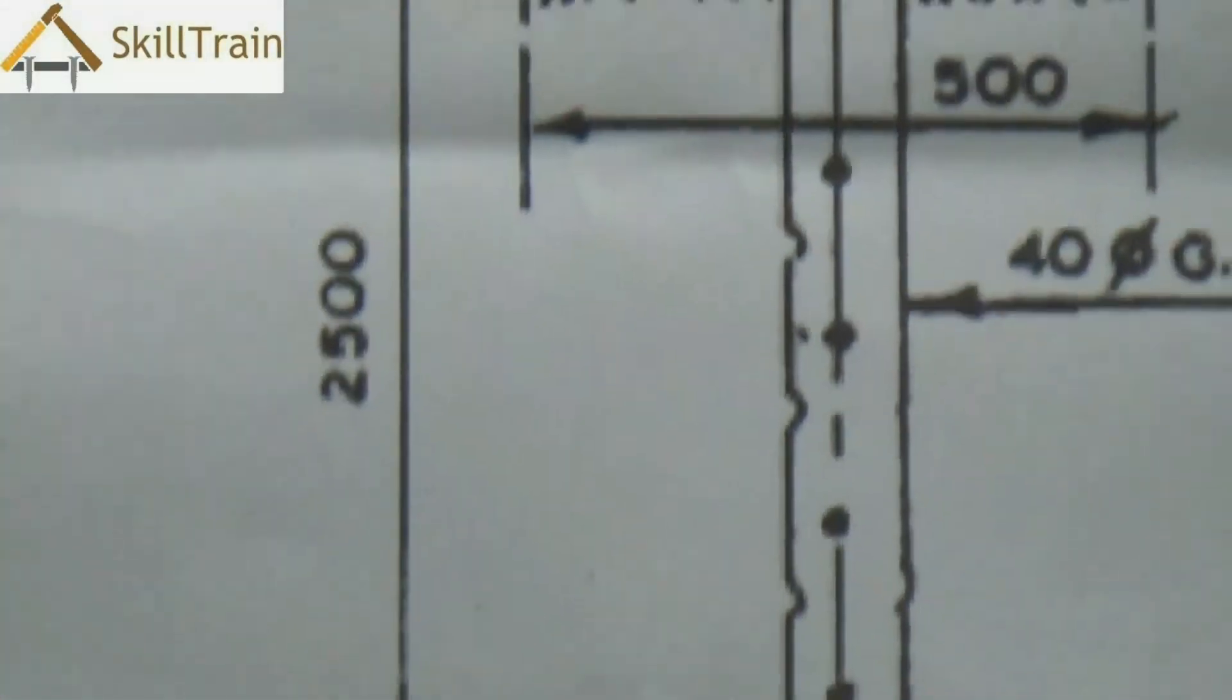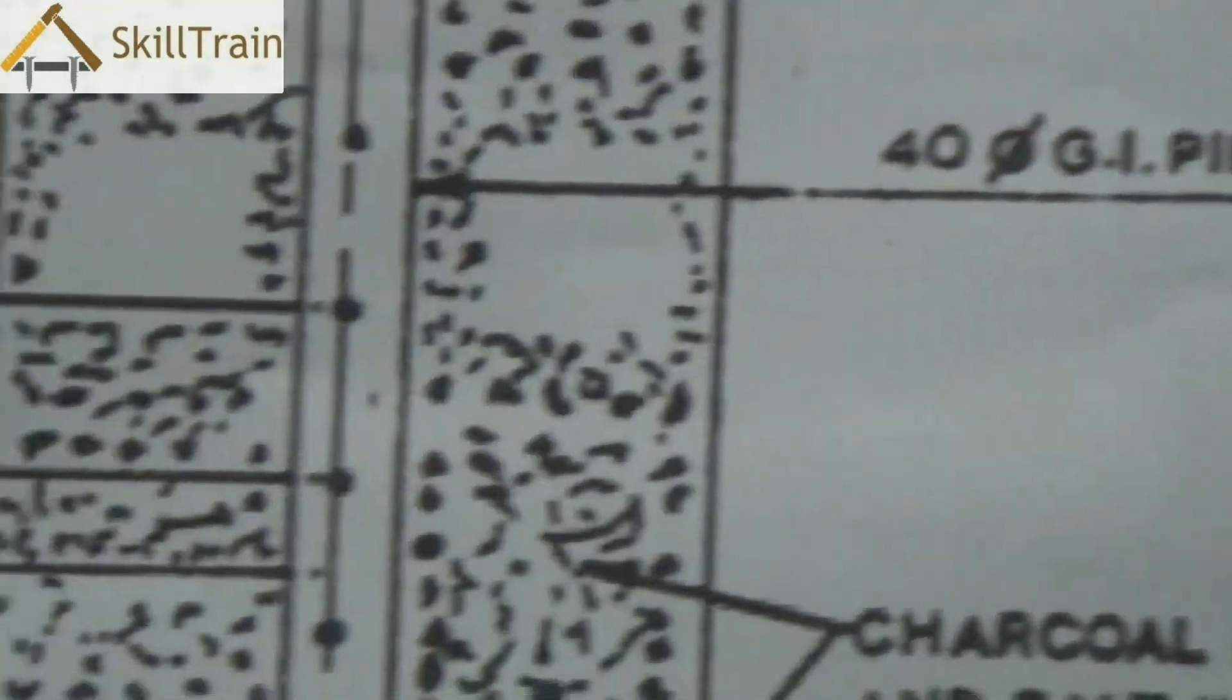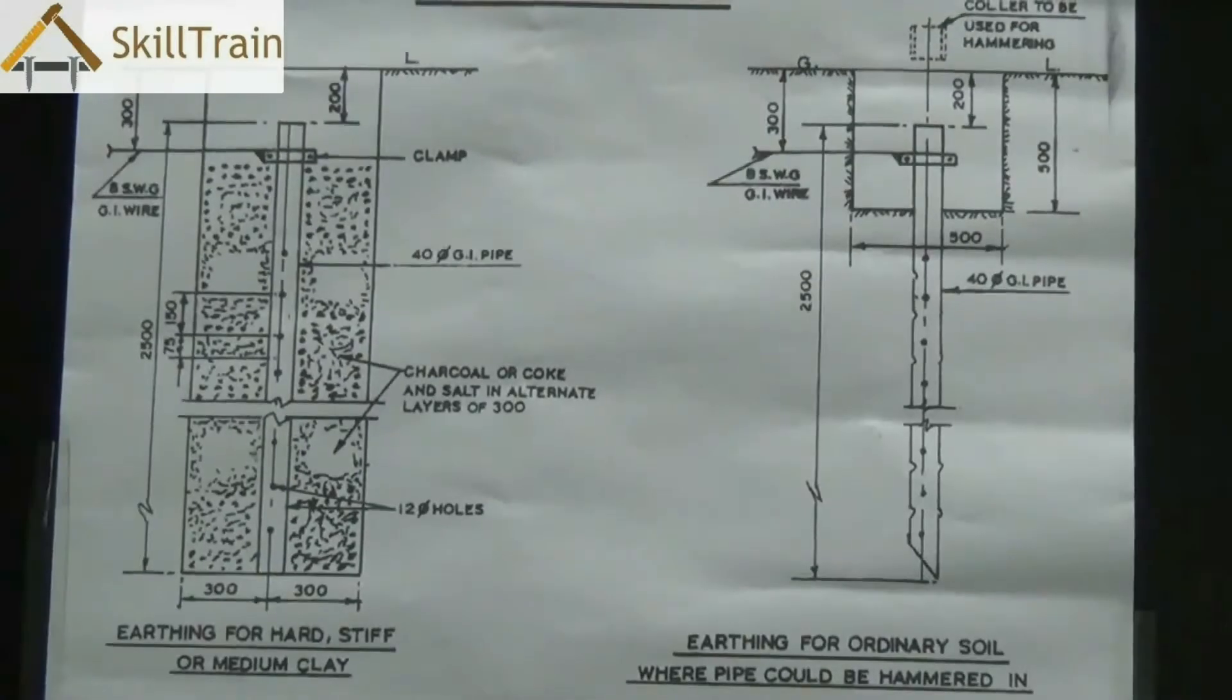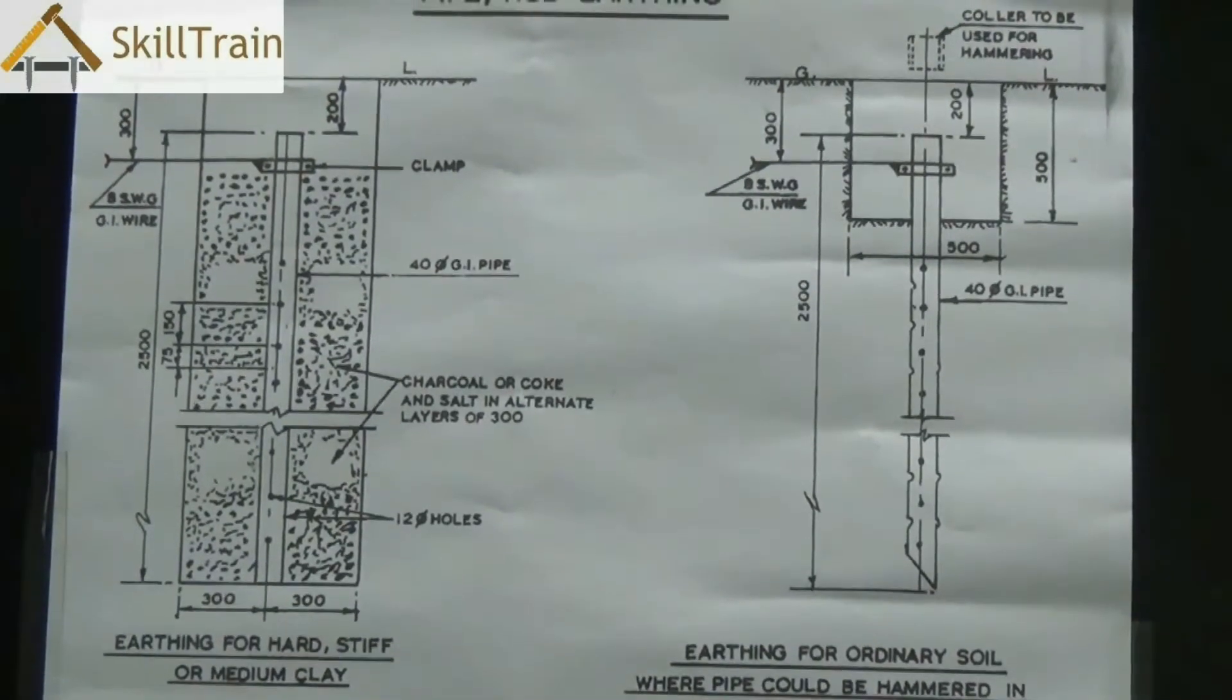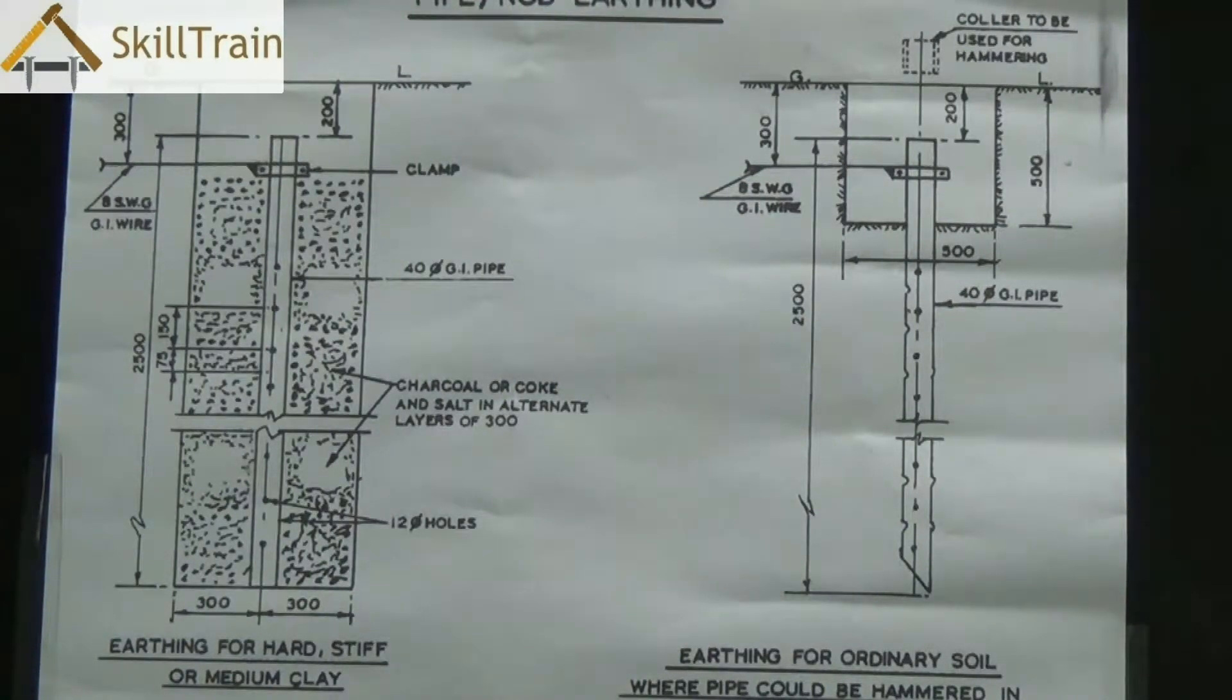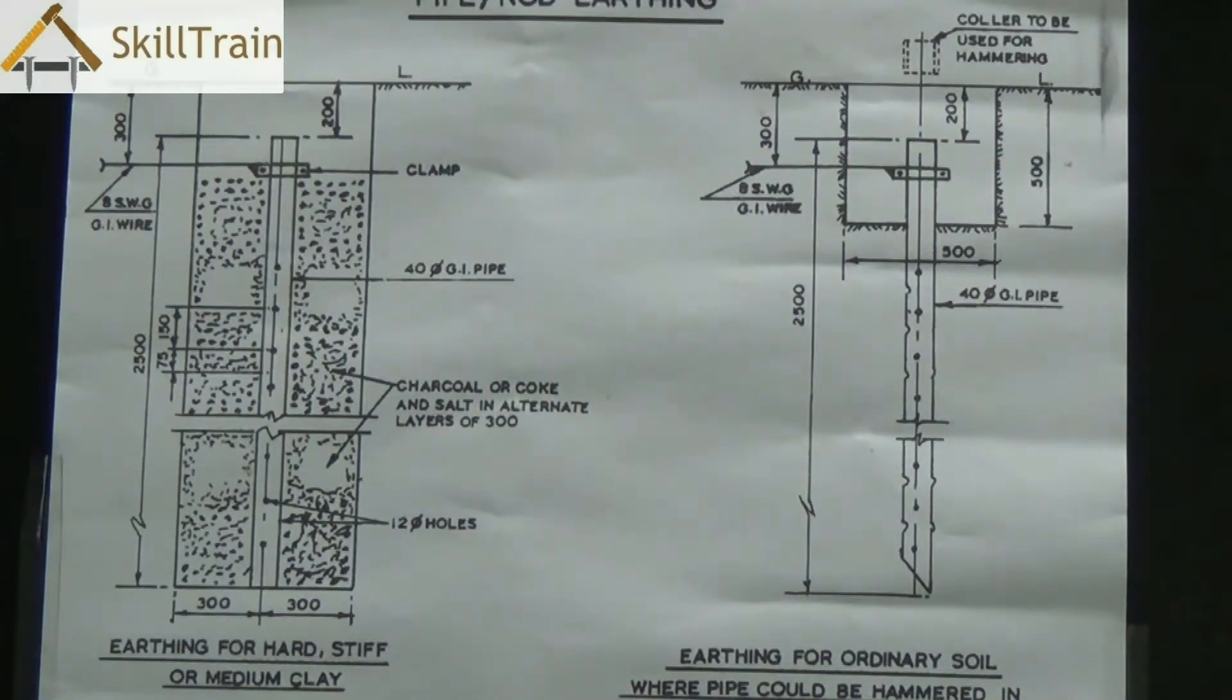Always ensure that there are holes made in these pipes at equal distances to ensure that they are properly placed and they are in full contact with the ground or with the salt and charcoal surface. The pipes we are using here are GI pipes. GI basically stands for galvanized iron pipe. The wires that are connected from the pipe to the mains are also galvanized iron wires. We did see the galvanized iron wire in one of the earlier videos when we were checking the board.